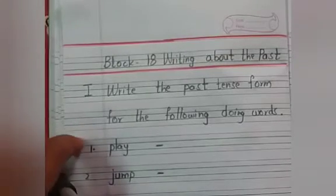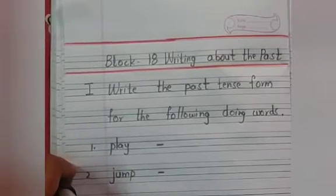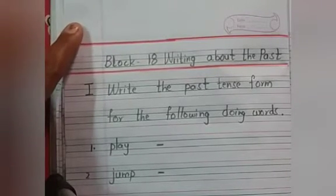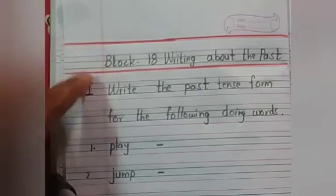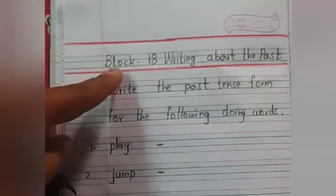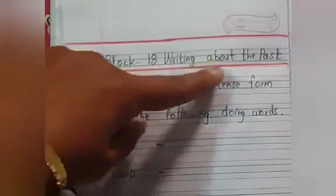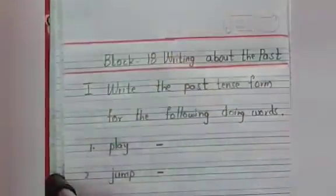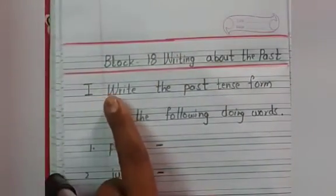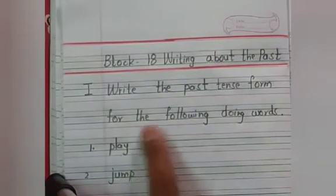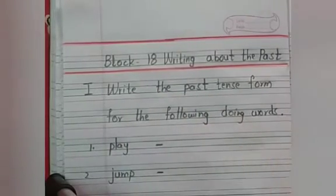Children, now all of you take out your English notebook. Write the date and put double margin, then write down: Block Eighteen — Writing About the Past.